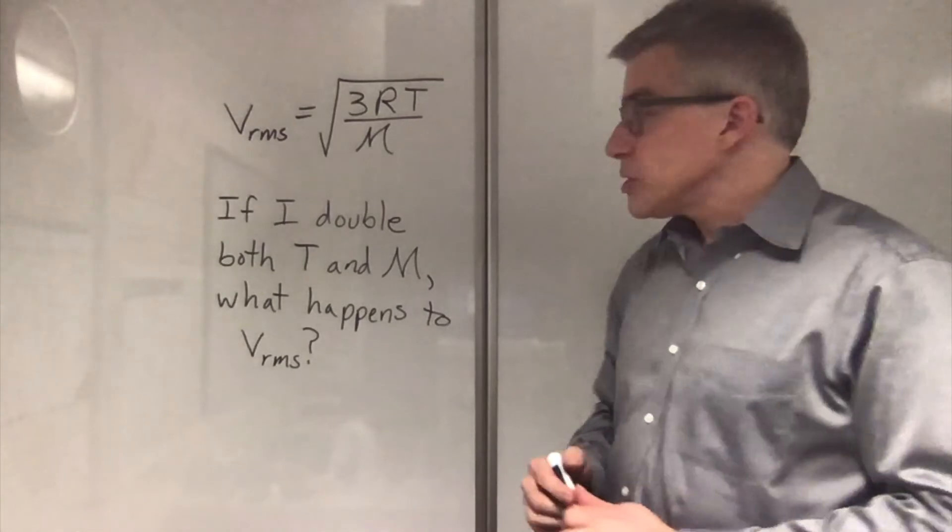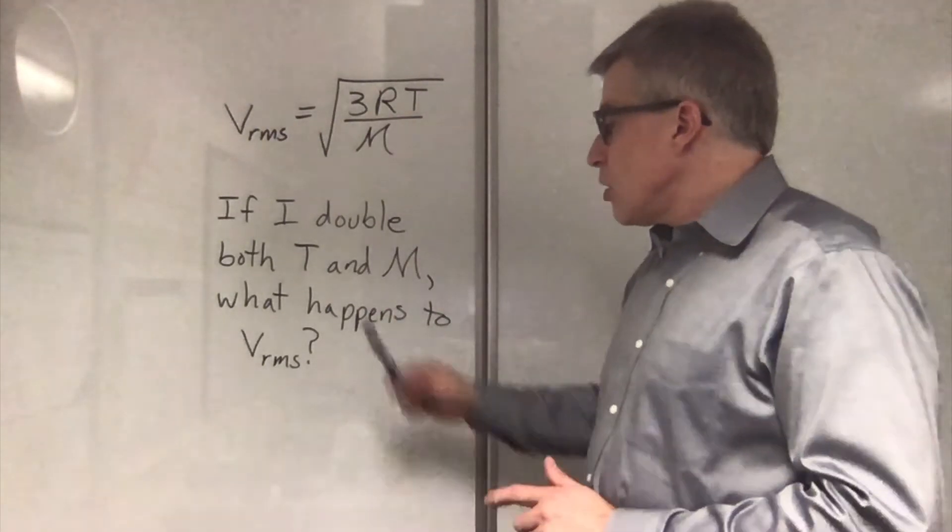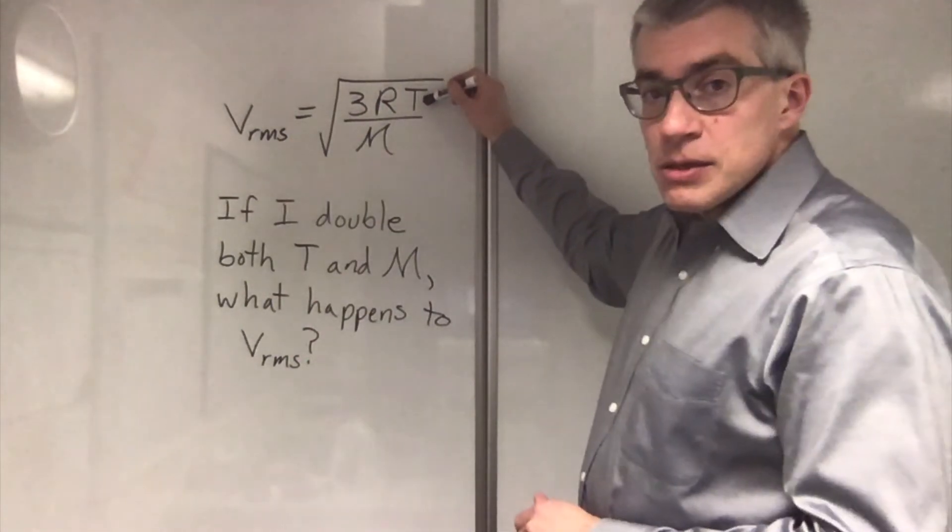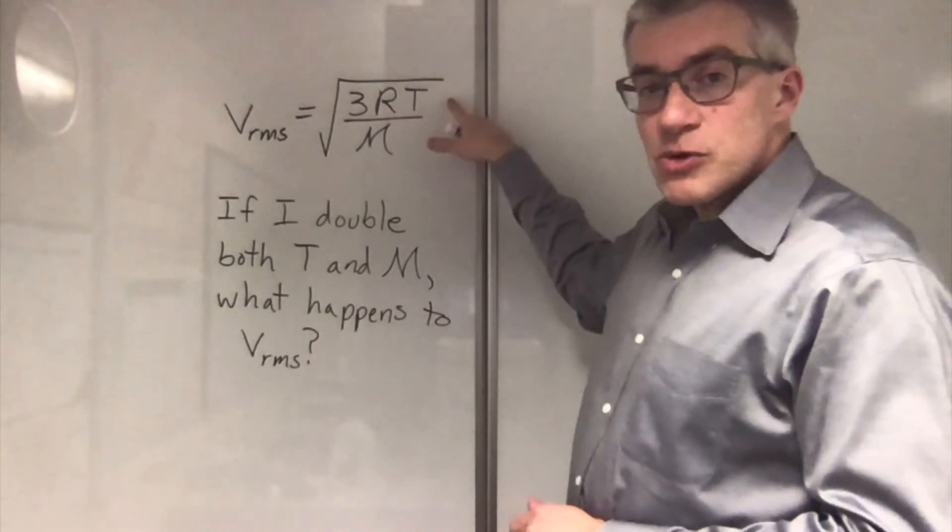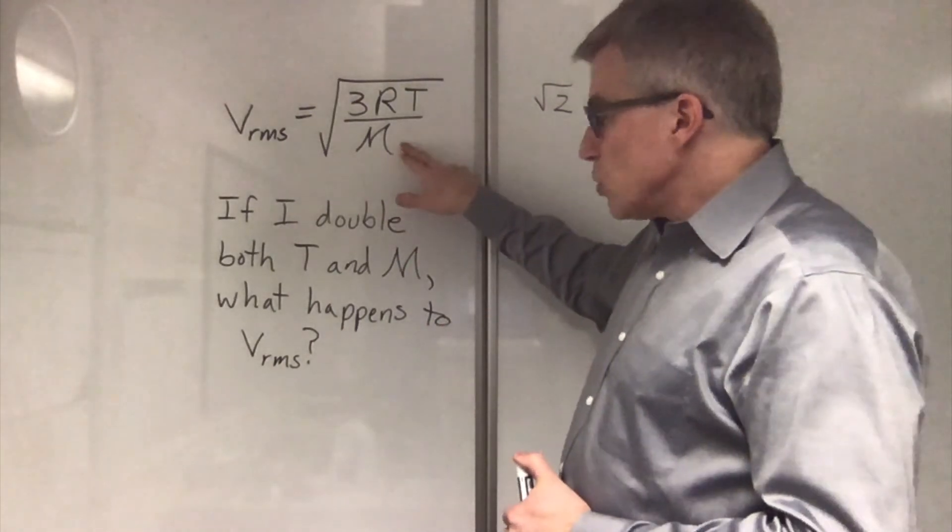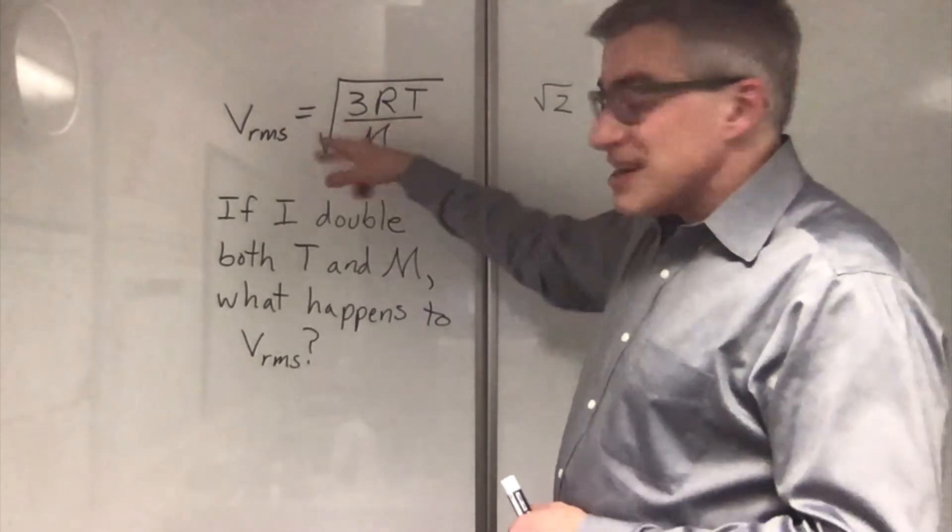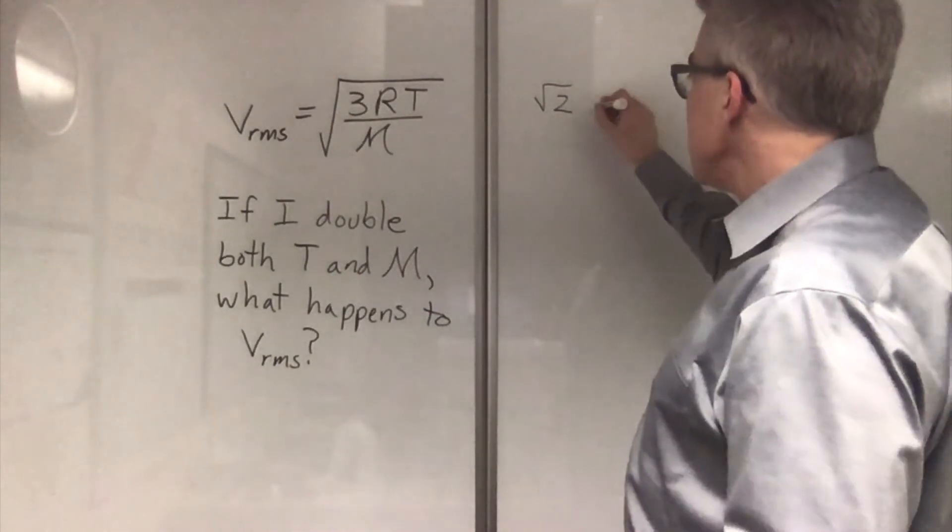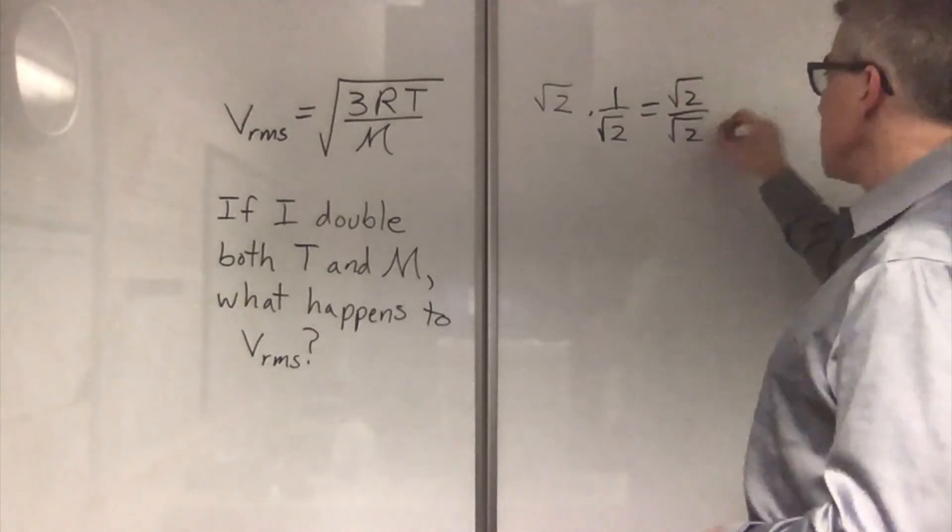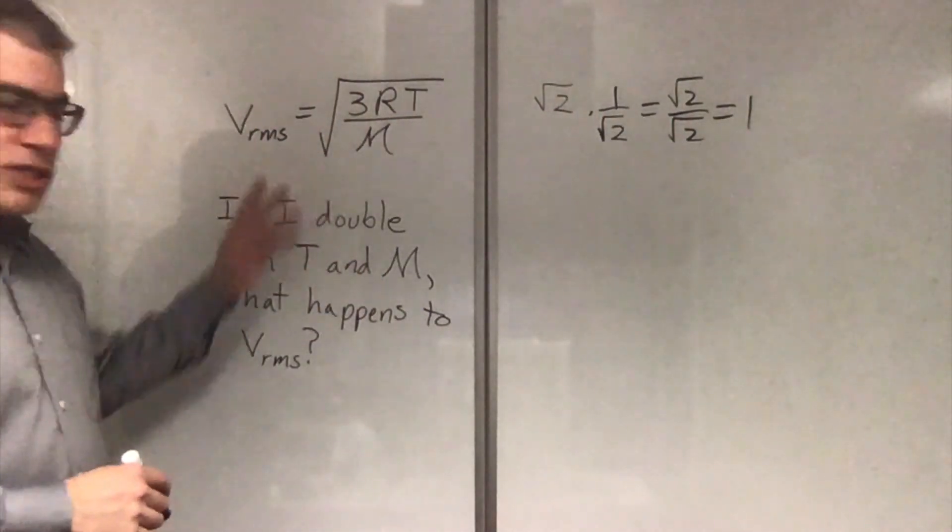One more. This one with a square root. If I double both t for temperature and m for molar mass, what happens to the v rms? Well, if you're doubling t, this is inside a square root. You'd get a factor of two, but it's in a root. So it would be square root of two. But the molar mass is also doubled. That's on the bottom. So that'd be a half. And it's in a square root. So it would be times one over square root of two. Square root of two over square root of two equals one. And the v rms ends up unchanged. Sometimes, changes will cancel each other out.